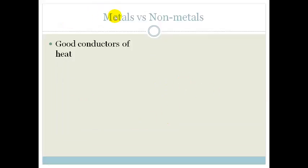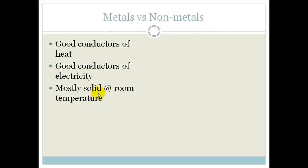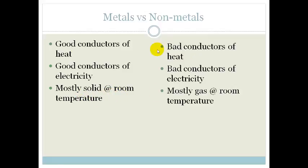So first of all our metals are good conductors of heat, they are good conductors of electricity and they are mostly solid at room temperature. Whereas our non-metals are bad conductors of heat, they are bad conductors of electricity and they are mostly gas at room temperature except in fact only for bromine. So that is the difference between our metals and our non-metals.